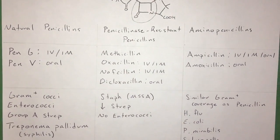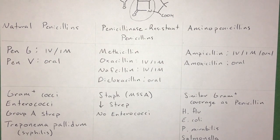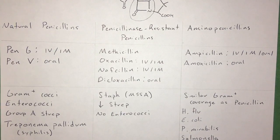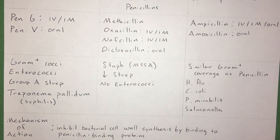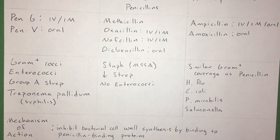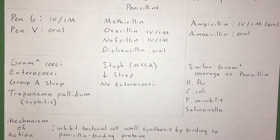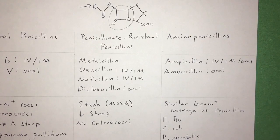For the natural penicillins, there's Pen G, which is IV and IM, and Pen V, which is oral. These can be used for gram-positive cocci, including enterococci and Group A strep, and it's also used for syphilis. They used to be used for just about everything, including gram-negatives, but over time resistance has limited their use.